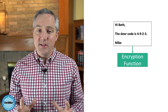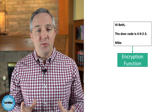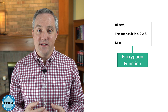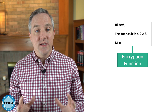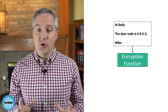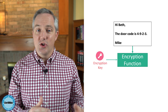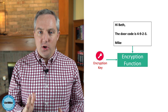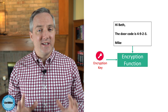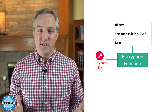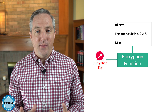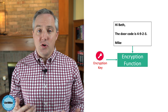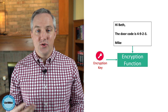I'm going to take this message and run it through an encryption function to prevent people other than Beth from reading its contents. When I do this, I have to provide the encryption function with both the plain text message and an encryption key. Just know that the key is what helps provide secrecy. So when I feed that plain text message and the key into the encryption function, that function produces a ciphertext message as output.